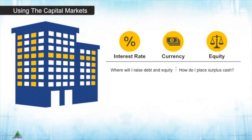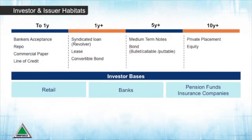If you use the debt capital markets you're borrowing money, typically through a loan or a bond. There are various borrowing alternatives for different uses, such as bank acceptances for trade or leasing for equipment. Some are bought by retail investors, some by large institutions. Whatever the instrument used, the borrower will have an exposure to interest rates.